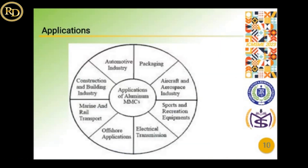There are many applications of aluminum matrix composites. It is mainly used in the automobile industry, helping to convert heavy metal components to lighter vehicles with less lubrication and as a cost-effective substitute for heavy metals. Due to its less weight and high tensile strength, it is also used in packaging, construction and building industries, offshore applications, and aircraft and aerospace industries. The composite can be customized according to needs, making it highly applicable in almost every sector.